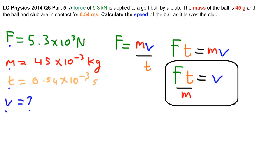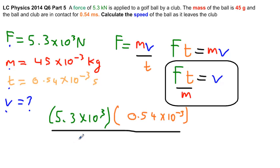So 5.3 times 10 to the 3, that's f, multiplied by t which is 0.54 times 10 to the minus 3, divided by m, and m is 45 times 10 to the minus 3, and that when you work it all out will be 63.6 meters per second, and that's how fast that thing is going.